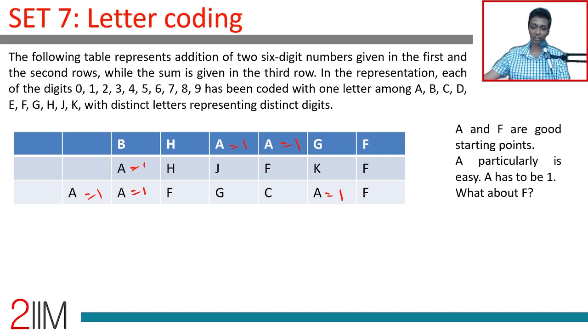F plus F is one. 0, 0, 0 works. 1, 1, 2. 2, 2, 4. 3, 3, 6. 4, 4, 8. 5, 5, 0. 6, 6, 2. 7, 7, 4. None of that works. This is hard. We've got F also. We've just got two letters.